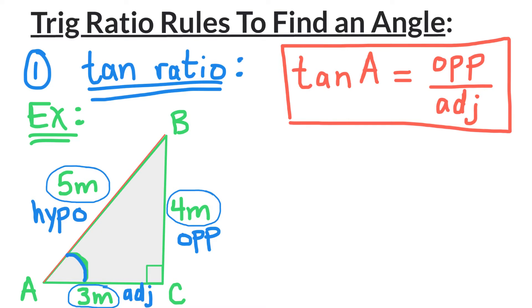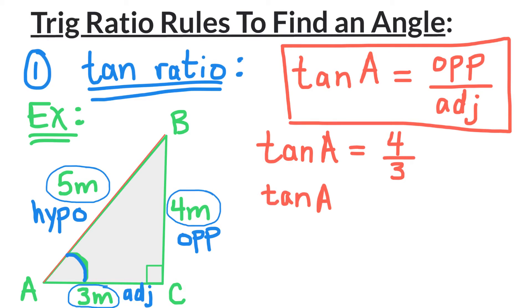Now we will apply the formula we have. On the left side we write tan A equals, and on the right side we fill in the numbers. The opposite side is 4 meters divided by the adjacent side 3 meters. Tan A approximately equals 1.33.